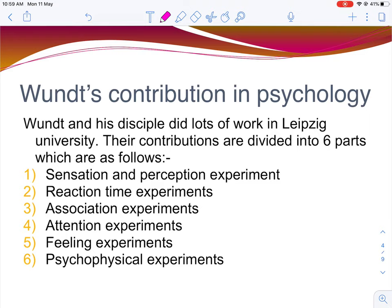Wundt and his disciples did a great deal of work at Leipzig University. Their contributions are divided into six parts: sensation and perception experiments, reaction time experiments, association experiments, attention experiments, feeling experiments, and psychophysiological experiments.